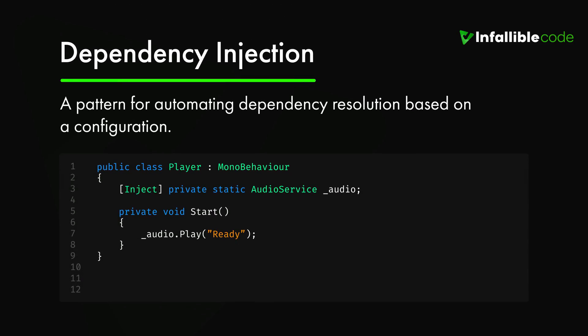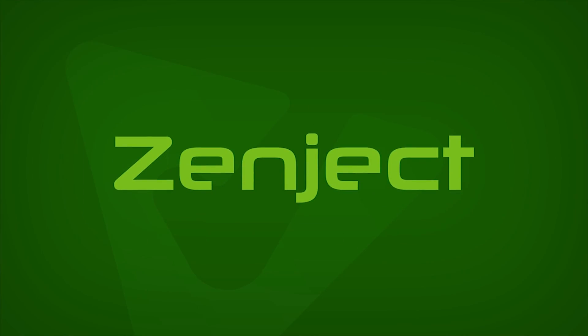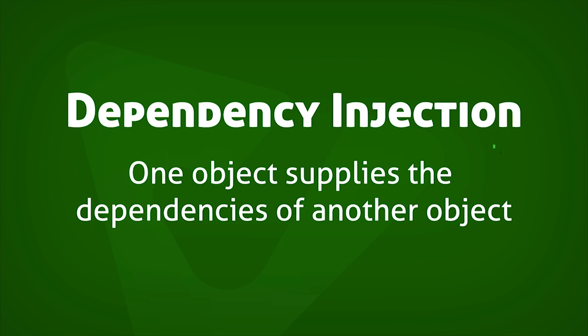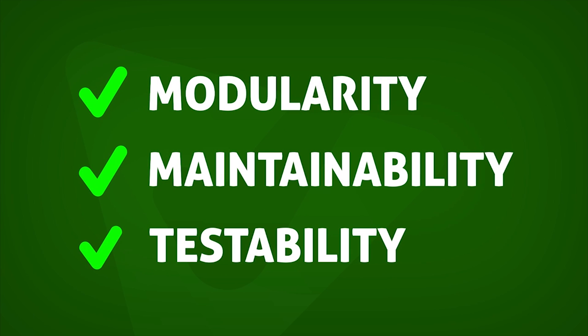Last up is dependency injection. Dependency injection is a pattern for automating dependency resolution — it allows you to configure all of your dependencies in one place and have them resolved automatically based on that configuration. While this technique can be considered overkill in some cases, it's a great option for code that requires a more sophisticated solution. If you're interested in learning more about dependency injection I recommend my series on Zenject, a lightweight dependency injection framework made specifically for Unity. The series covers the theory behind dependency injection and provides an overview of Zenject's features so you can get started quickly.